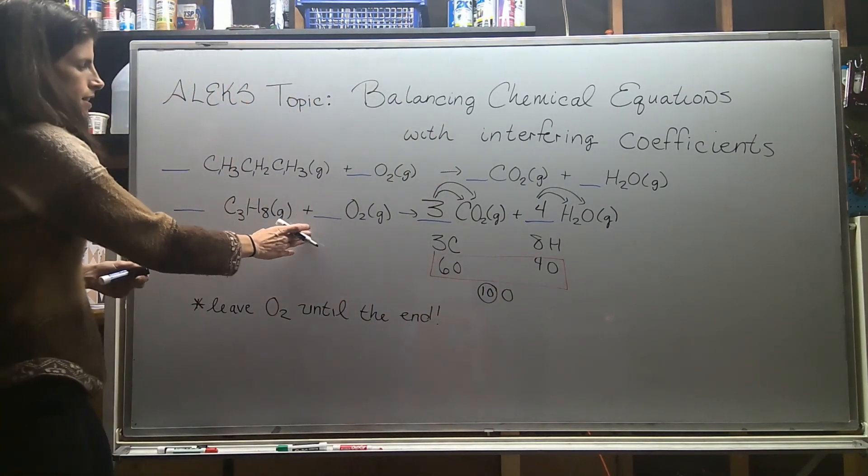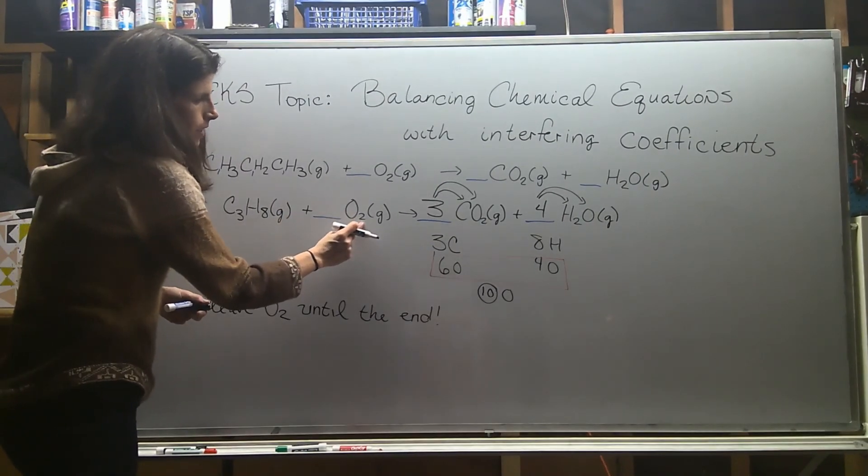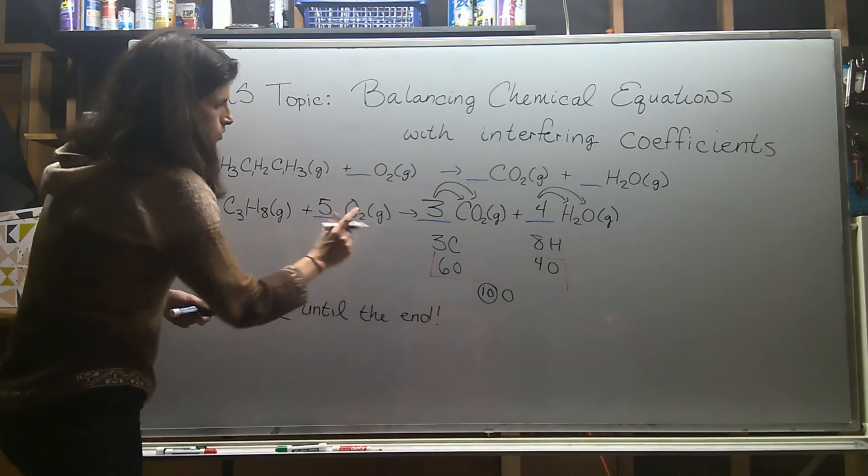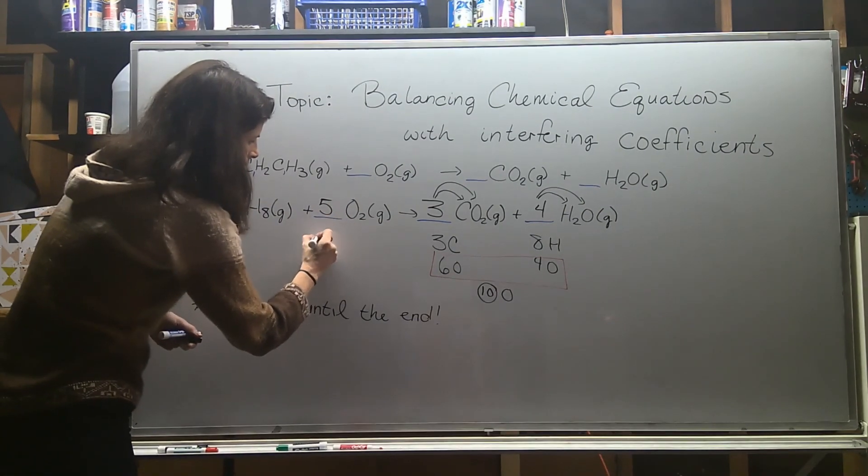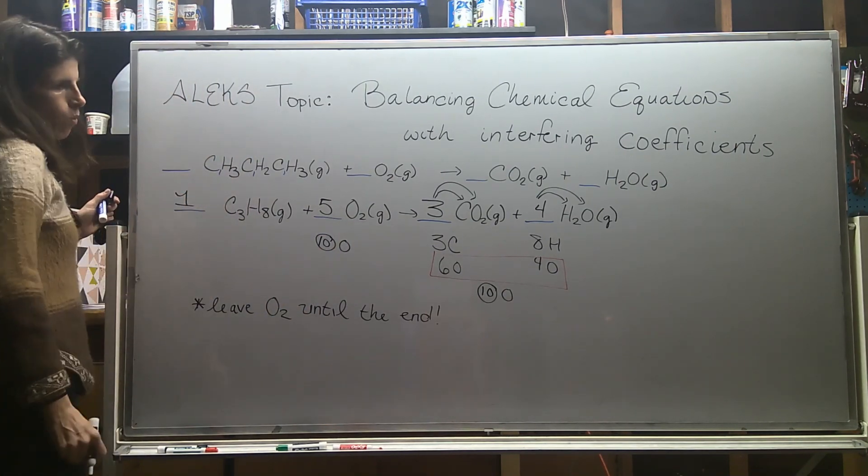When I go back to this side, I notice that this is coming in pairs of two. It's diatomic. So if I put a five out here, five times two will give me the ten oxygens that I need. So I'm going to leave this as a coefficient of one.